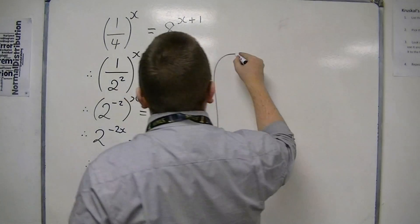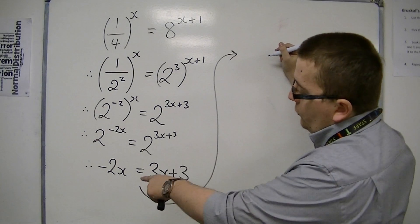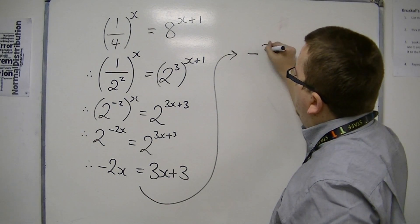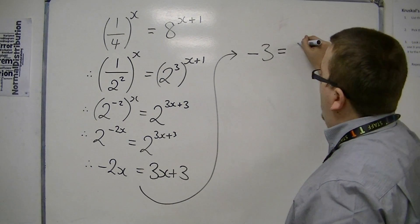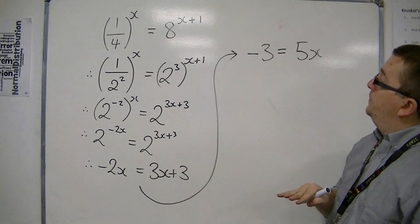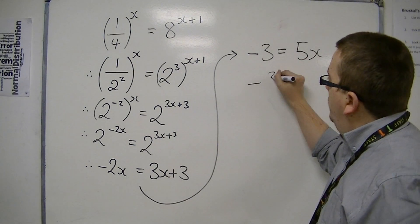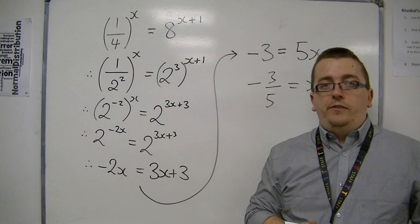So if you add 2x to both sides and take 3 from both sides, taking 3 from both sides means I'm going to get a minus 3 on the left-hand side and a 5x on the right-hand side when I add 2x to both sides. Then divide through by 5, so x is minus 3 fifths.